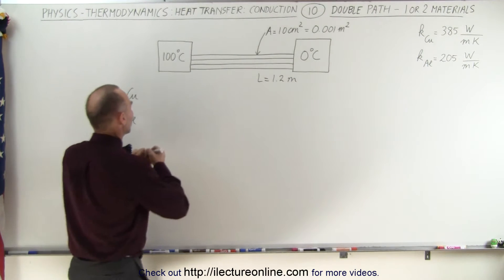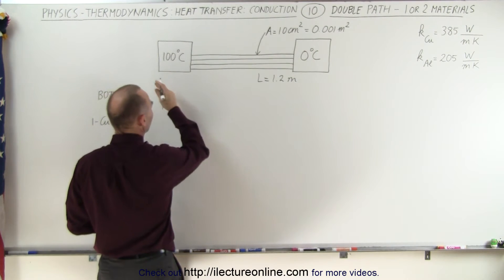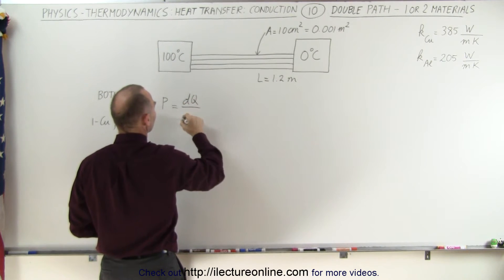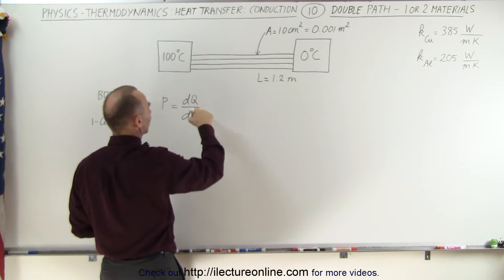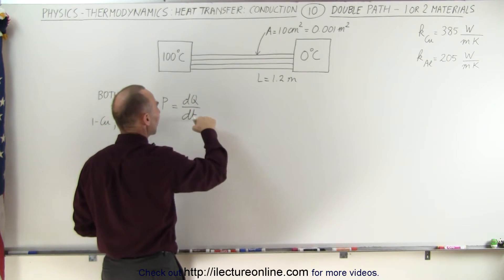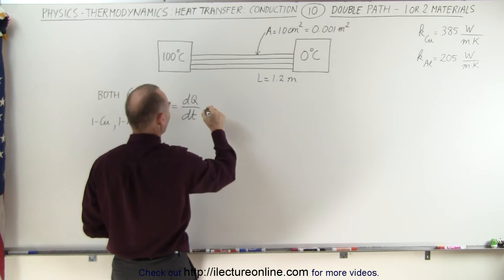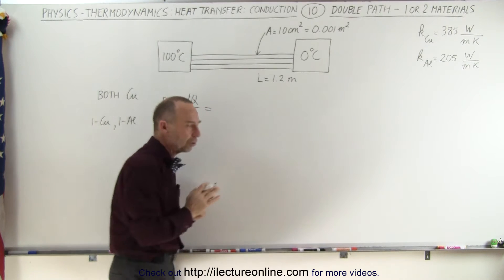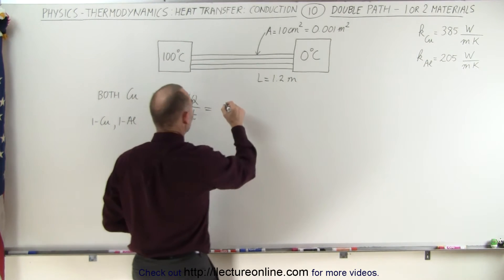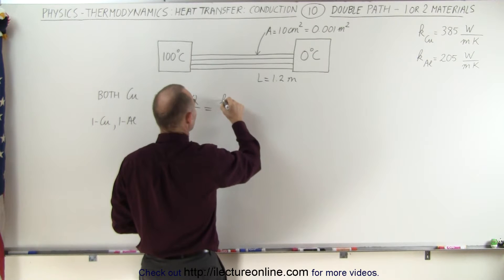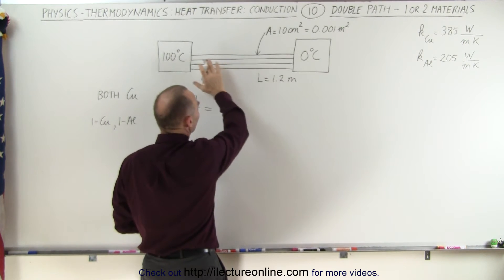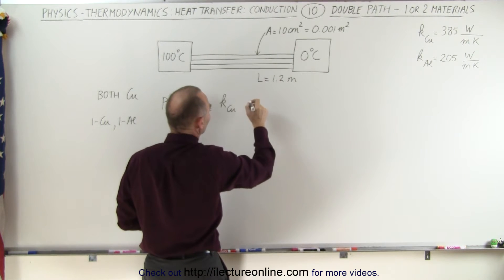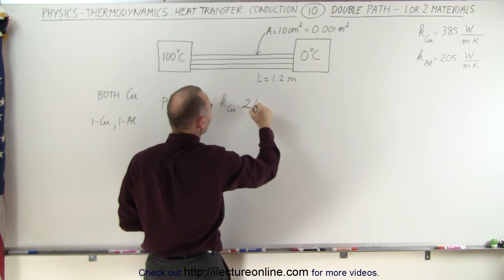How do we do that? We use the same equation. The power transmitted as heat through the conducting path is equal to dQ/dt — the amount of heat Q per unit time t being transferred across the conducting path. Since they're made out of the same material, we can use the same conductivity constant K for copper. And since they're two paths with the same cross-sectional area and the same length, we can simply double the area of one.